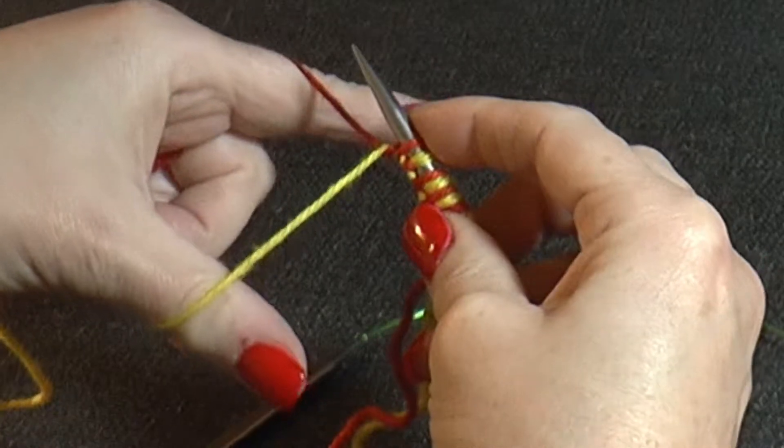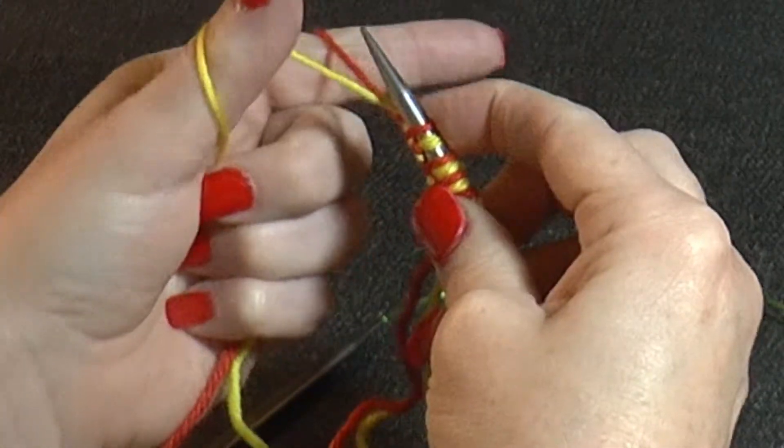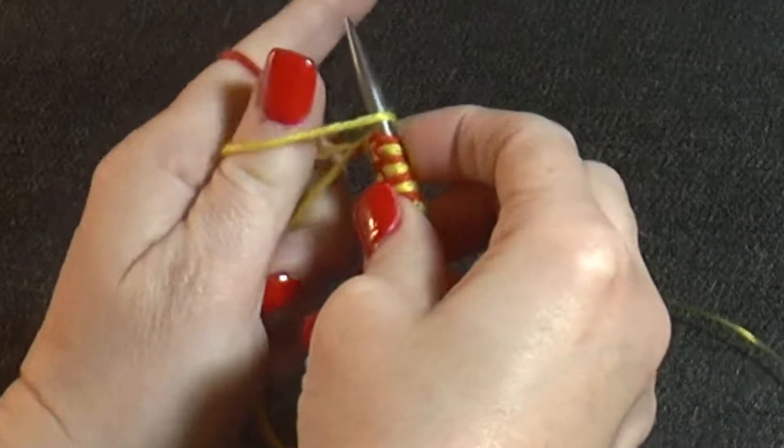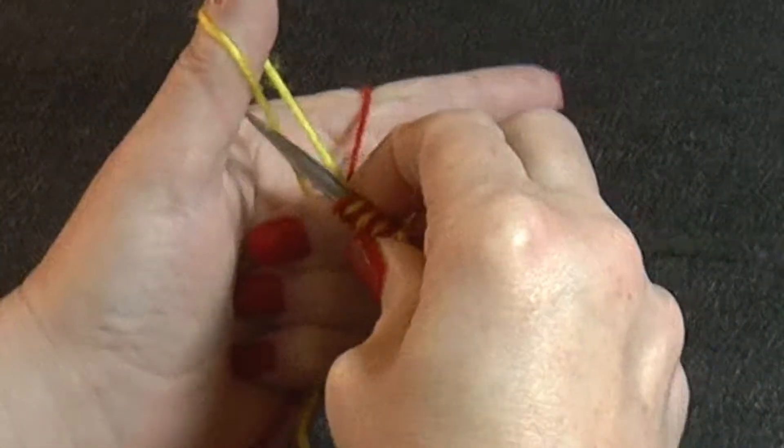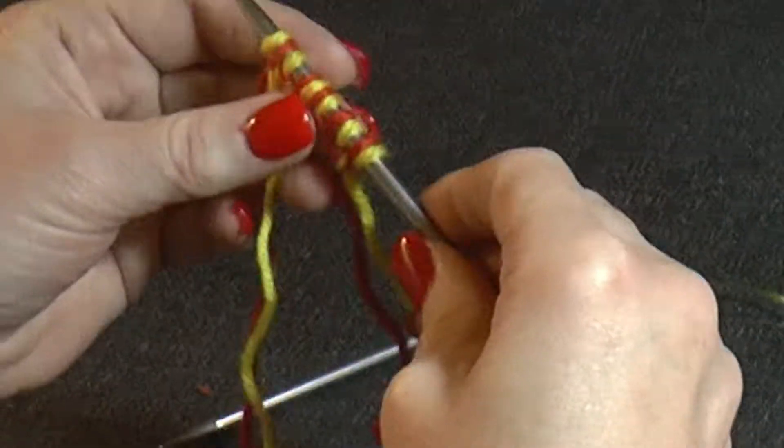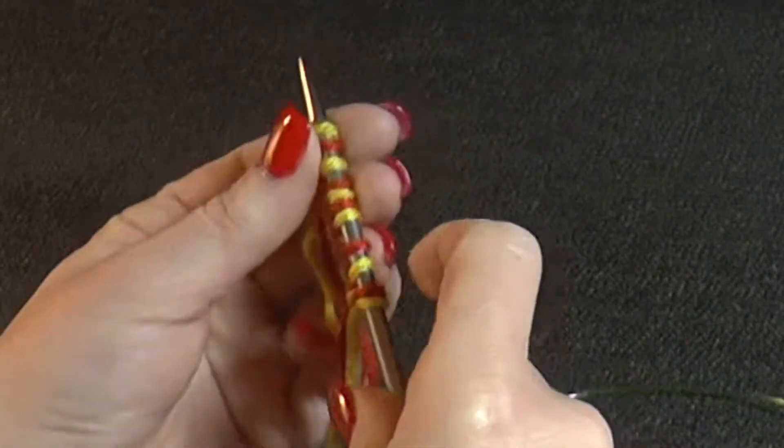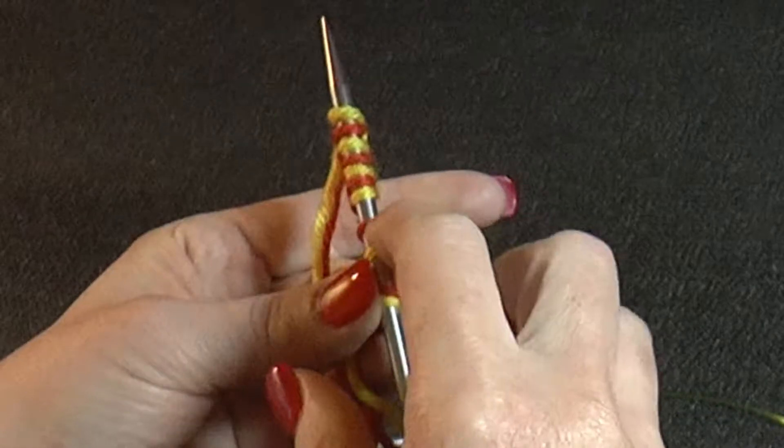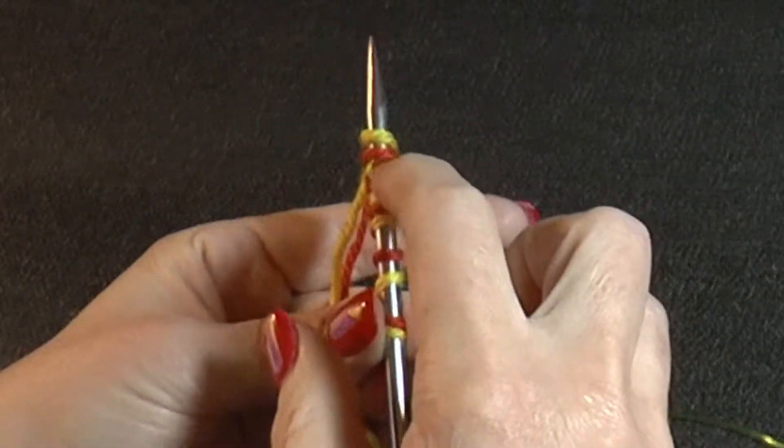Next color. Then all you really need to do to finish it up is, let's do a backward stitch there. And now, you're ready. Take those off and here are your stitches that you're going to knit with.